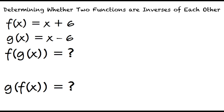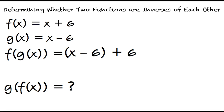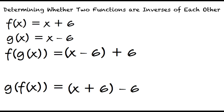To find f of g of x, I substitute g of x for the x in the f of x equation. So my new equation would read: f of g of x equals x minus 6 plus 6. That's right. And we would follow the same process for finding g of f of x, substituting the entire f of x function for the variable in the g of x equation, resulting in g of f of x equals x plus 6 minus 6.